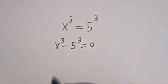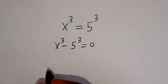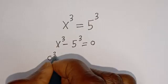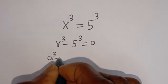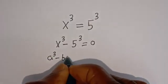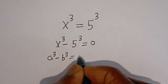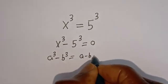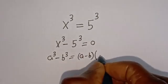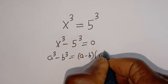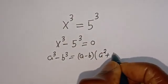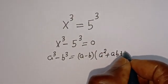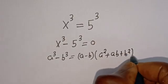Take note of this: if you have a to the power of 3 minus b to the power of 3, this is equal to (a minus b) bracket (a squared plus ab plus b squared).